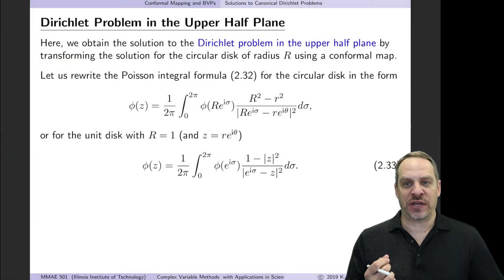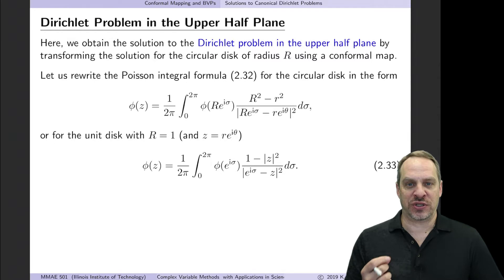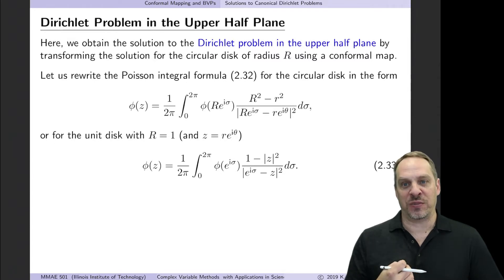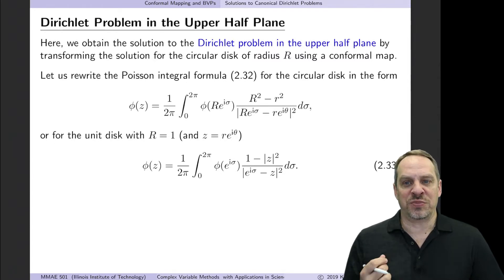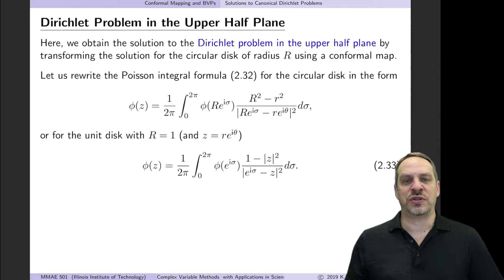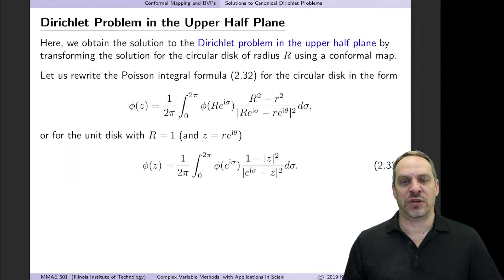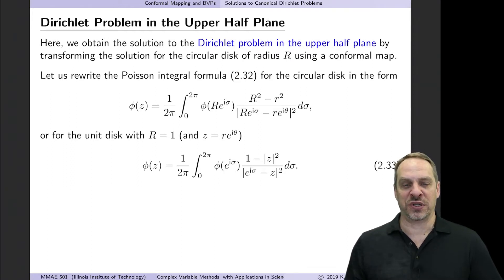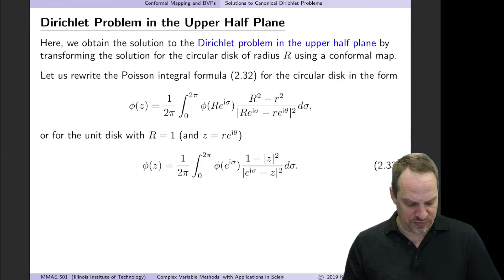In the previous video, I outlined how to obtain the solution to Poisson's equation in a circular disk — the Dirichlet problem — and we obtained the first of our two Poisson integral formulas. In this video, we're going to obtain the second of those two Poisson integral formulas and do an example.